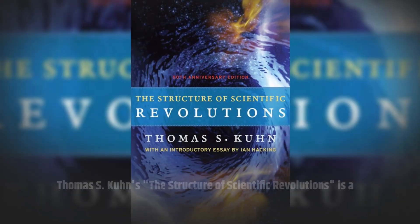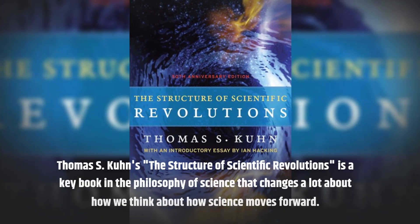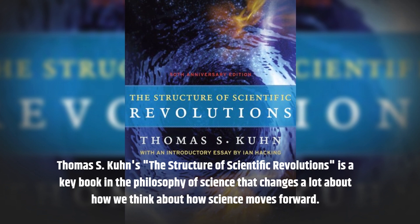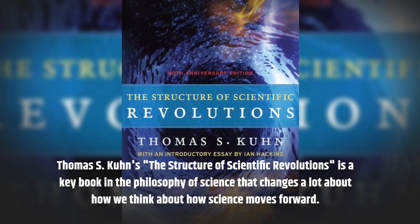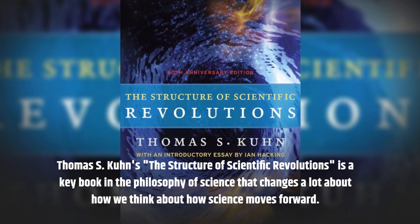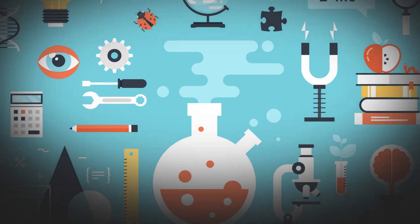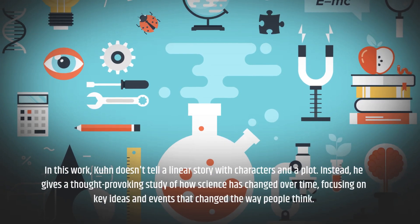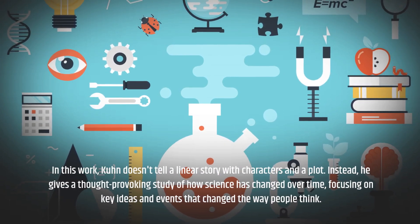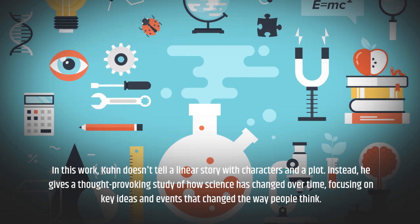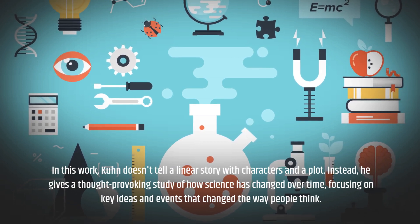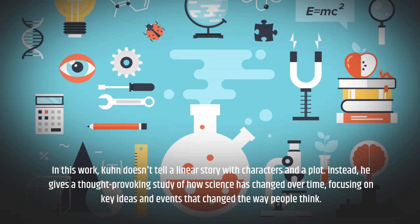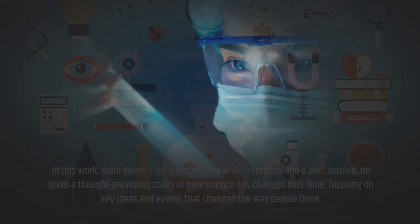Thomas S. Kuhn's The Structure of Scientific Revolutions is a key book in the philosophy of science that changes a lot about how we think about how science moves forward. In this work, Kuhn doesn't tell a linear story with characters and a plot. Instead, he gives a thought-provoking study of how science has changed over time, focusing on key ideas and events that change the way people think.